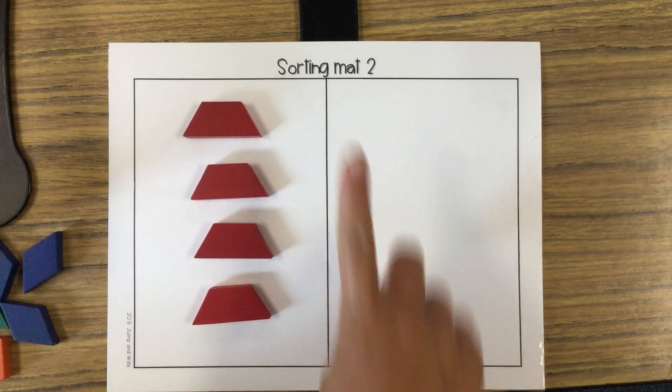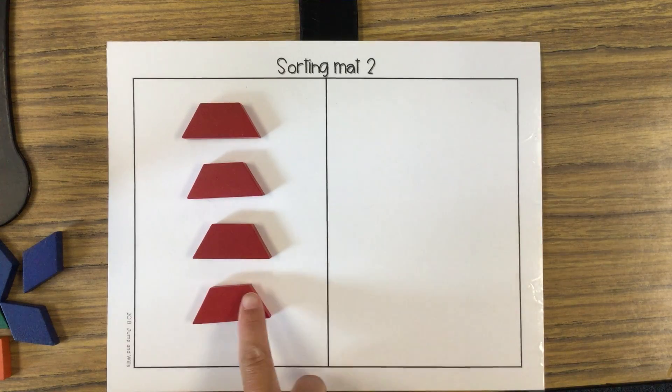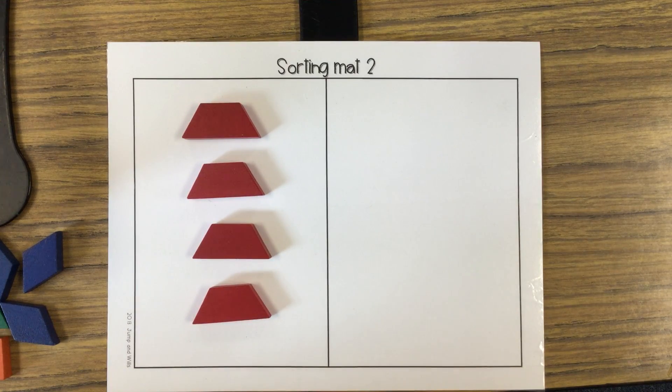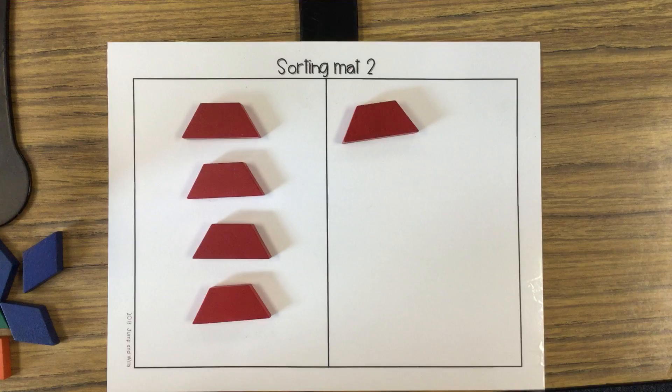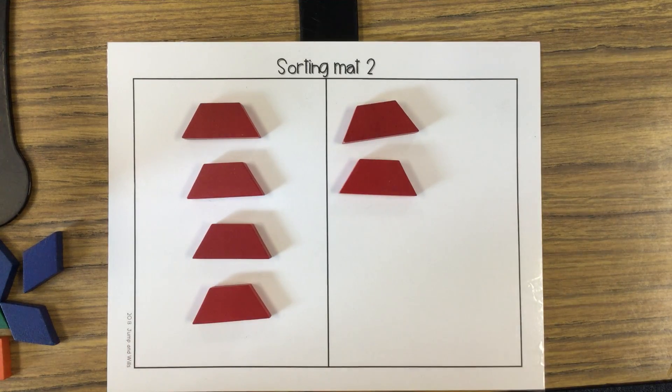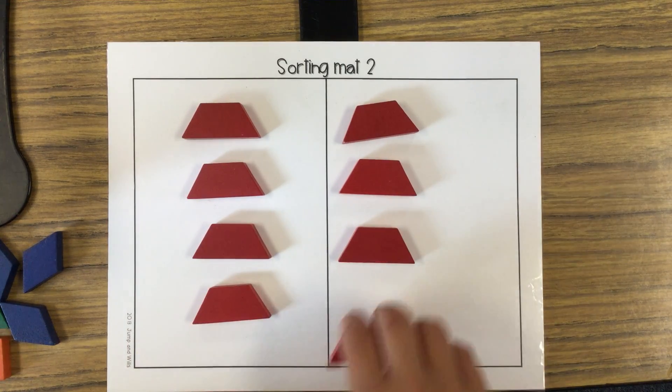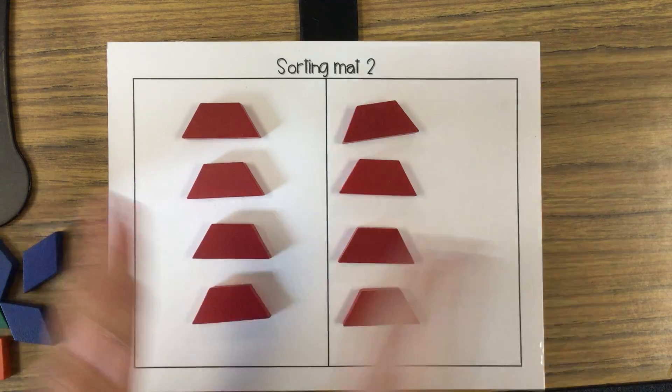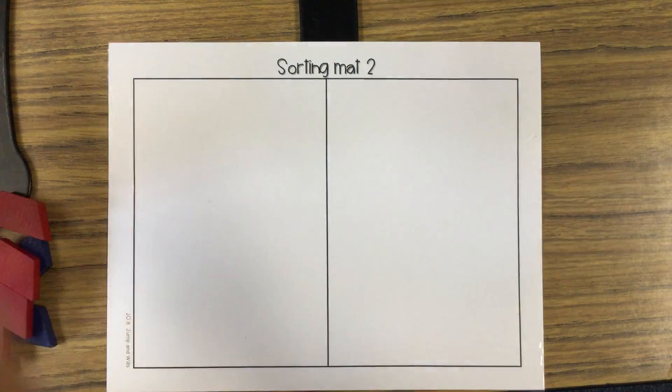All right. So let's count how many we have. One, two, three, four. And then we would match the same on the other side. One, two, three, and four. All right. So they're the same.